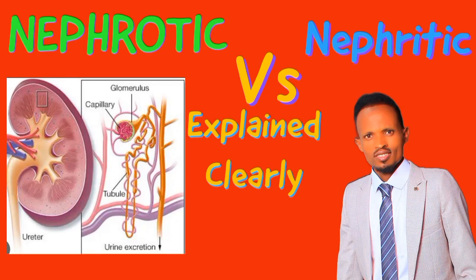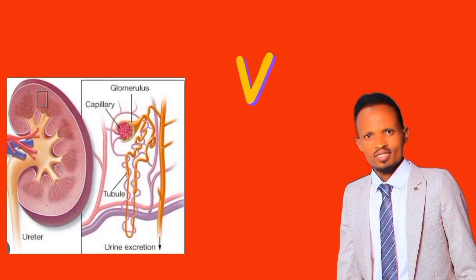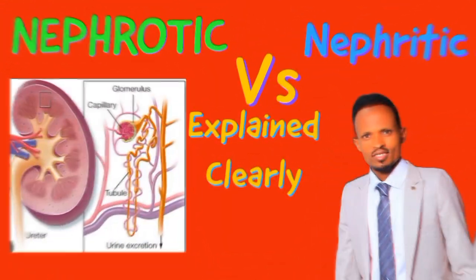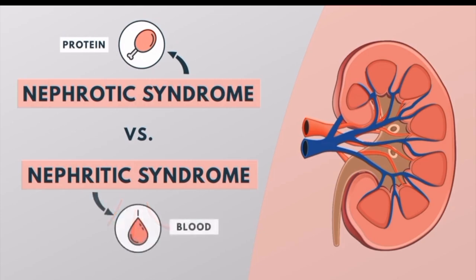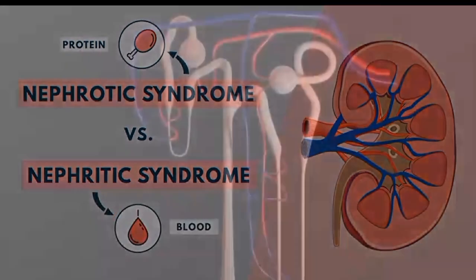Hello everyone. Today we are going to compare Nephrotic and Nephritic syndrome. The key difference between Nephrotic syndrome and Nephritic syndrome is that Nephrotic syndrome is characterized by an excessive amount of protein in the urine, whereas Nephritic syndrome is characterized by an excessive amount of blood in the urine.